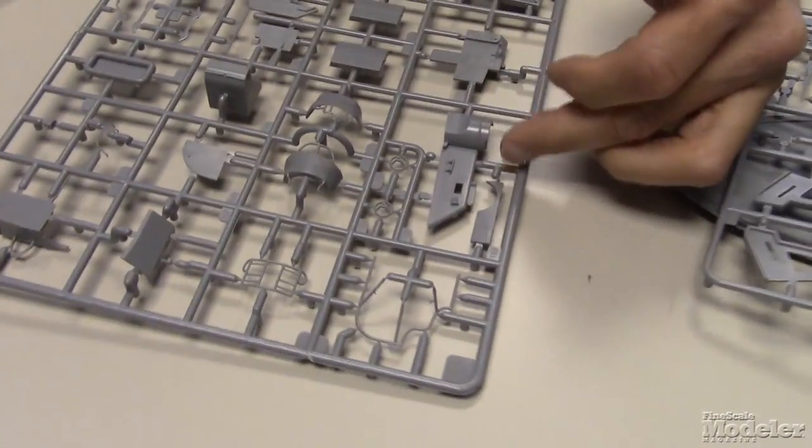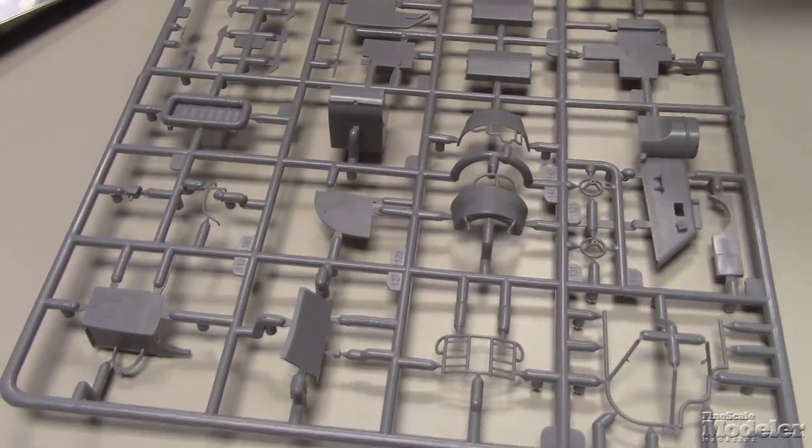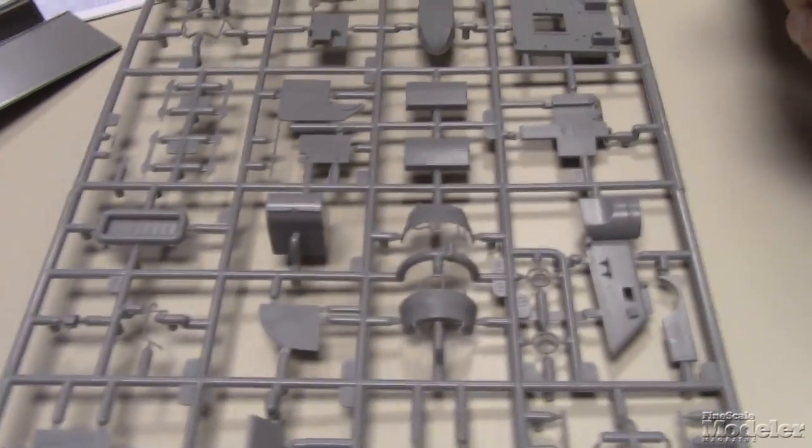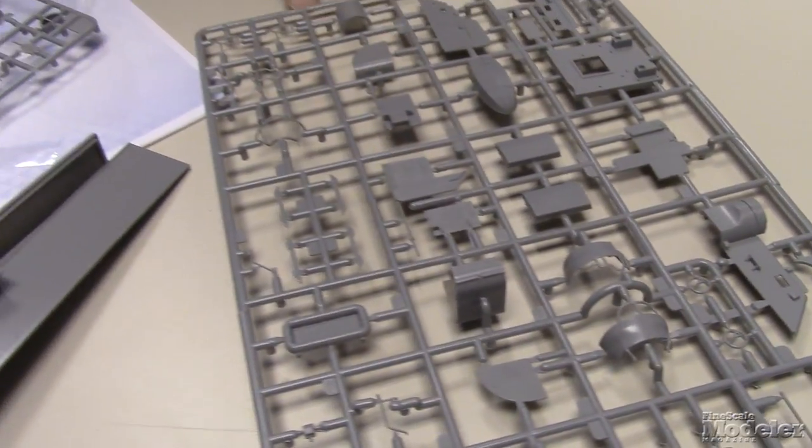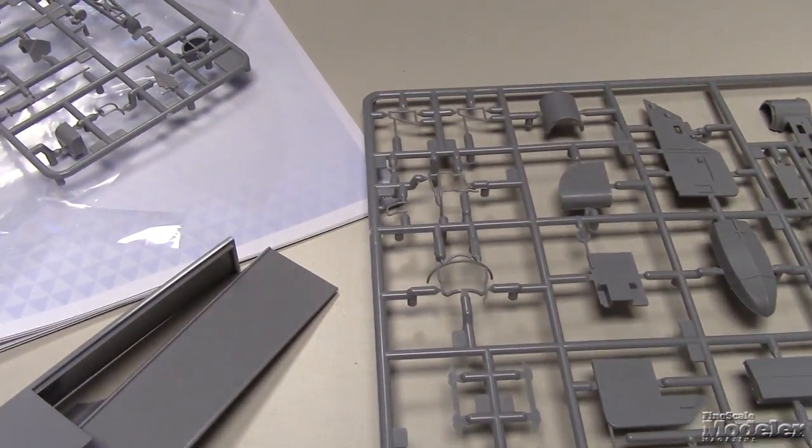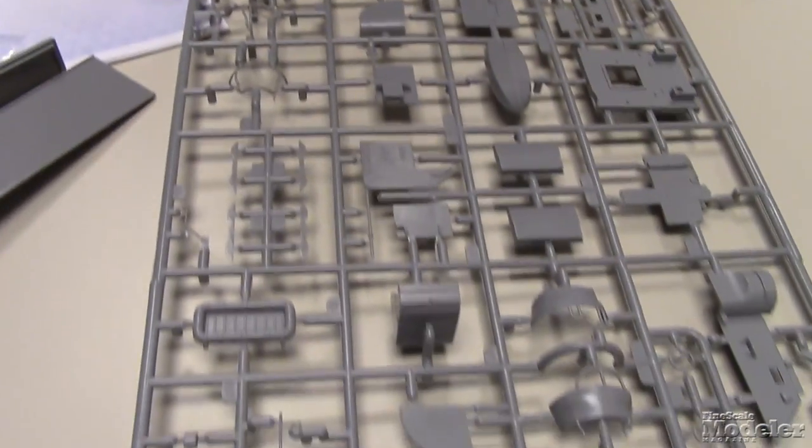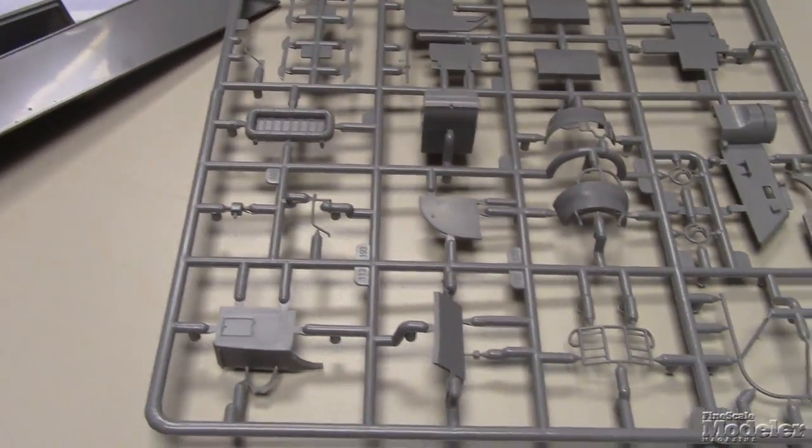We've got more structures for the wheelhouse, the superstructure, some of the anti-aircraft gun positions, the frames for the anti-aircraft guns, the Carley floats, one of the lifeboats.